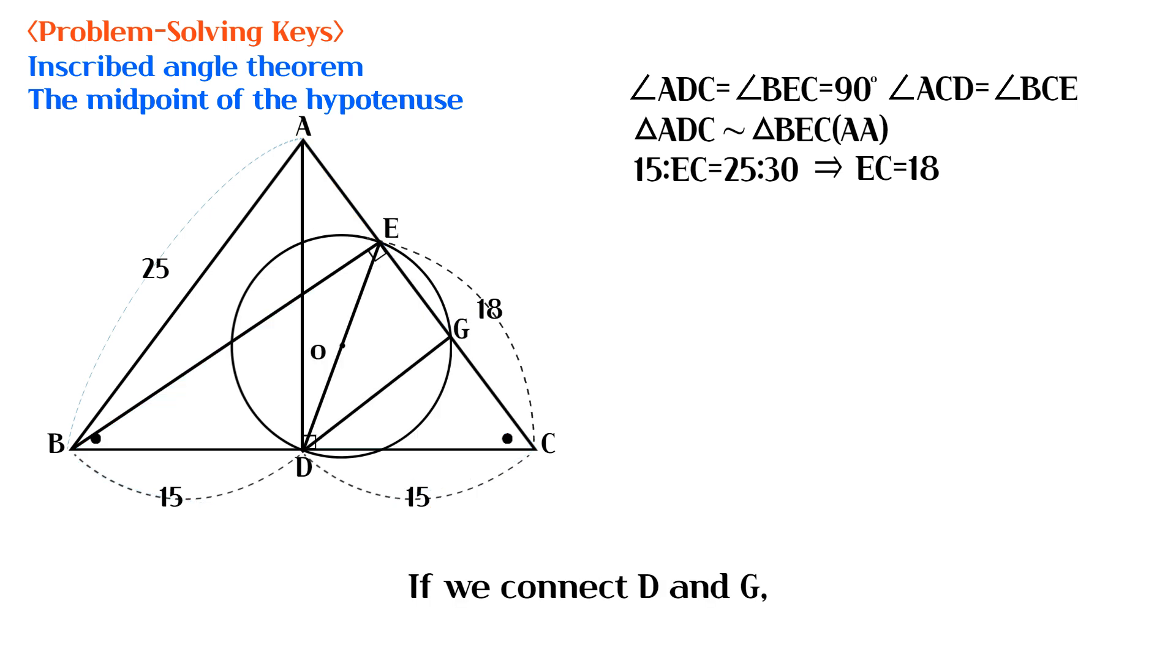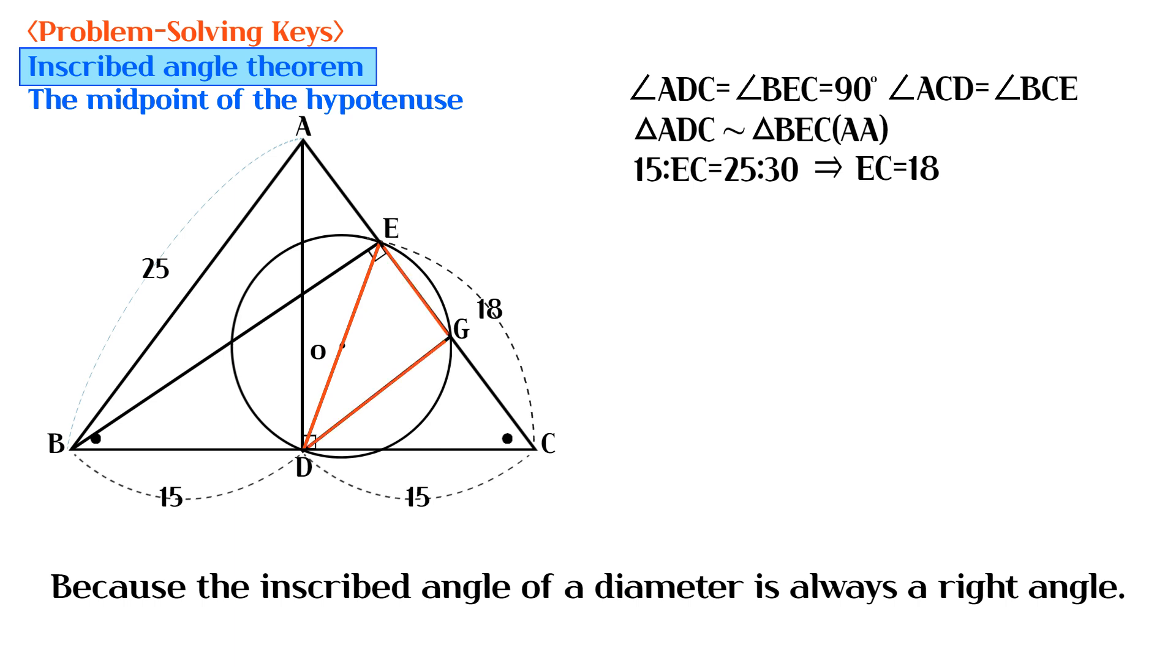If we connect D and G, angle EGD is a right angle, because the inscribed angle of a diameter is always a right angle.